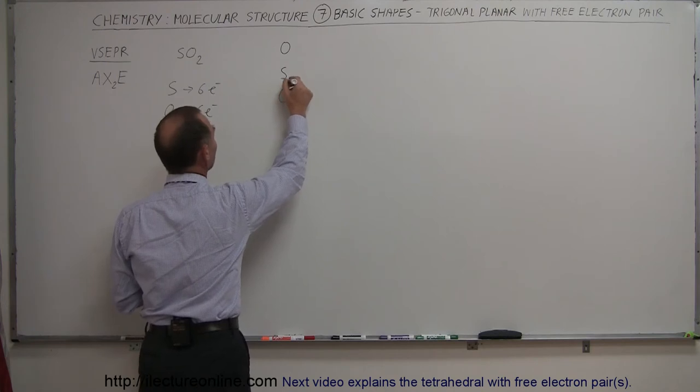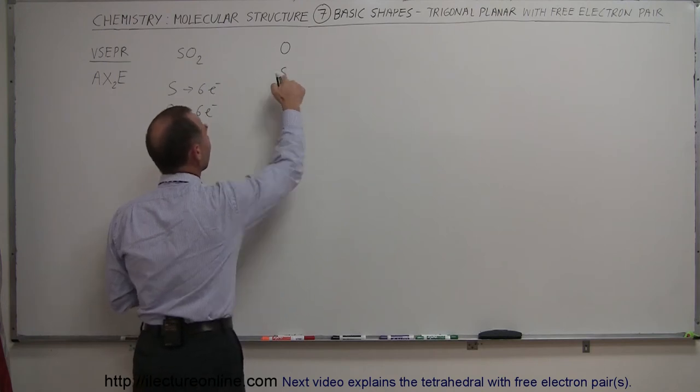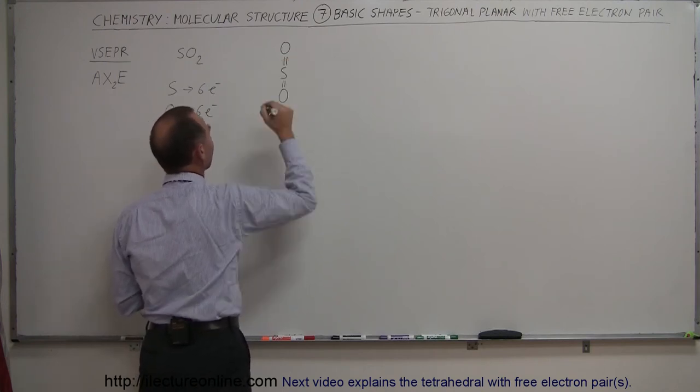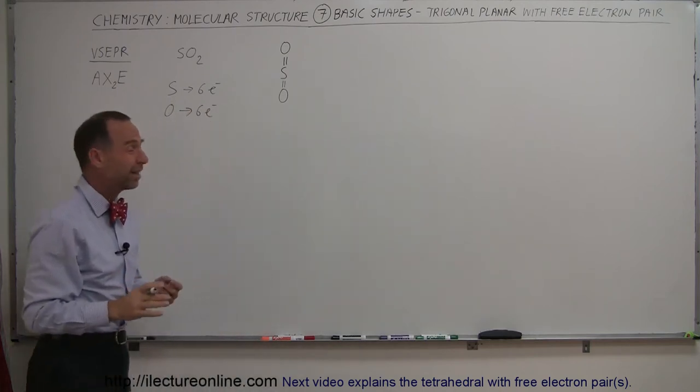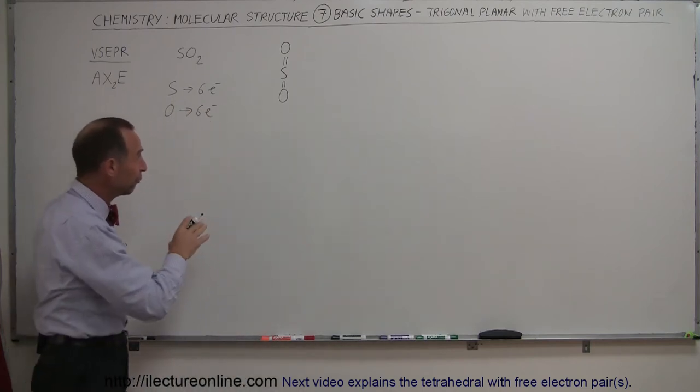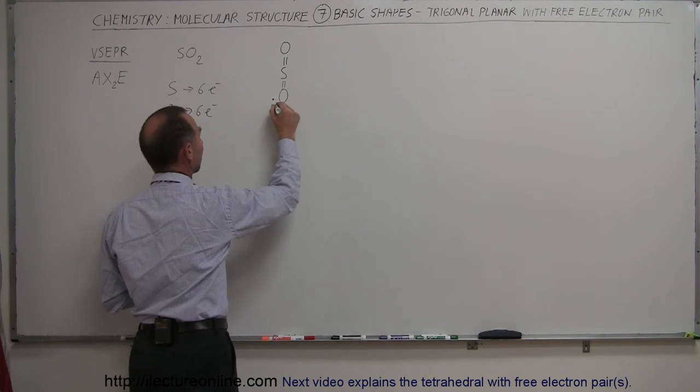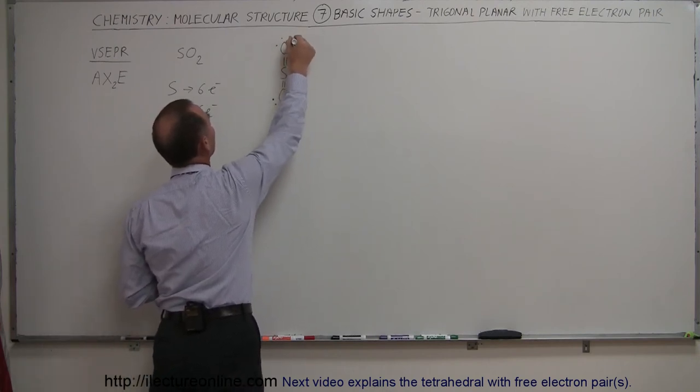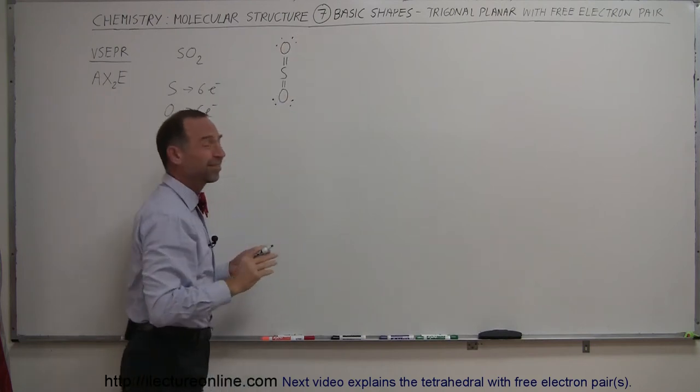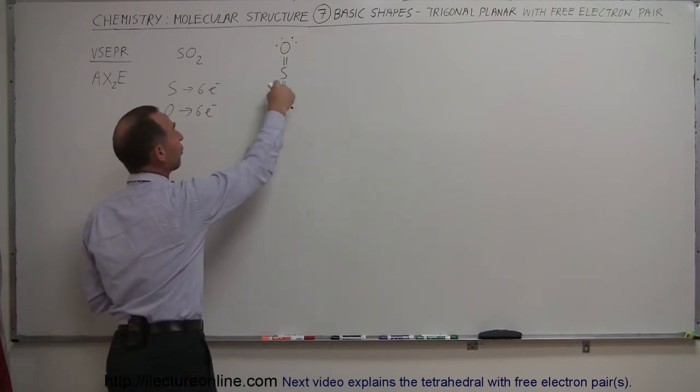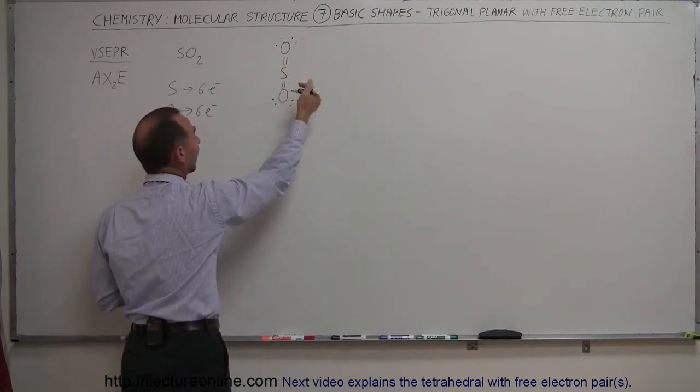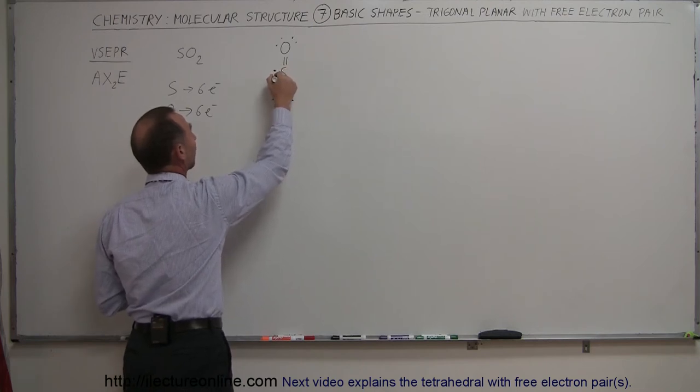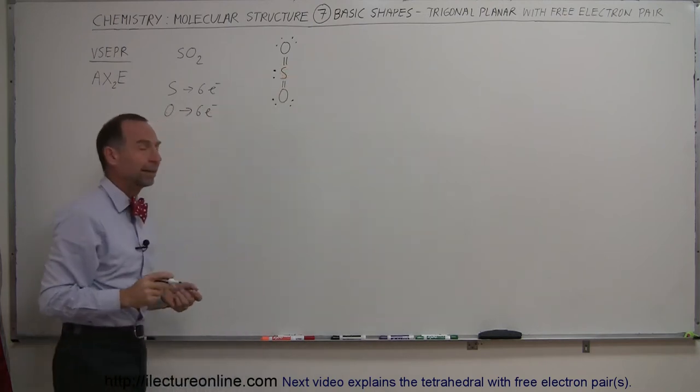So you're going to probably see a double bond over here between the sulfur and the oxygen, and a double bond over here between the sulfur and the oxygen, which means that the oxygen then will have four free electrons, or two free electron pairs, like so. And this oxygen will have the same. Now, since sulfur also started with six electrons, and it only has four tied up in the bonds, it has two additional electrons, so it will form another free electron pair like that.